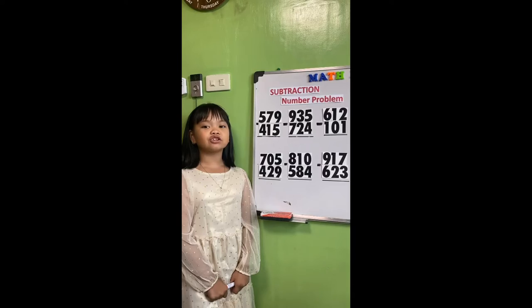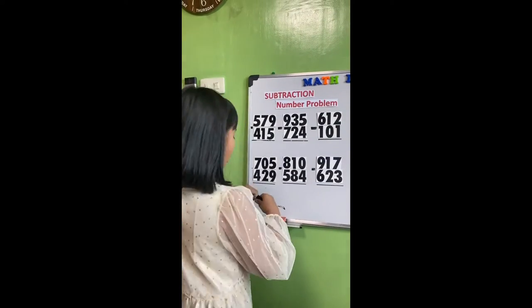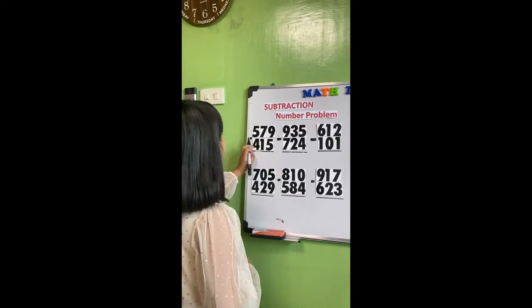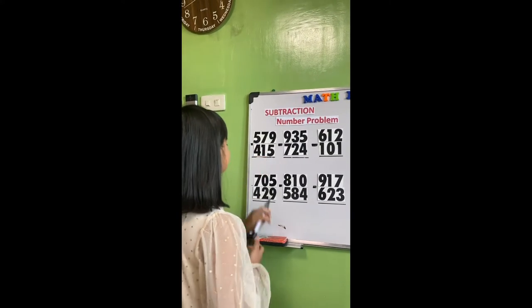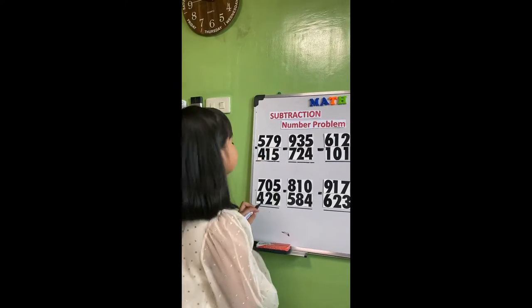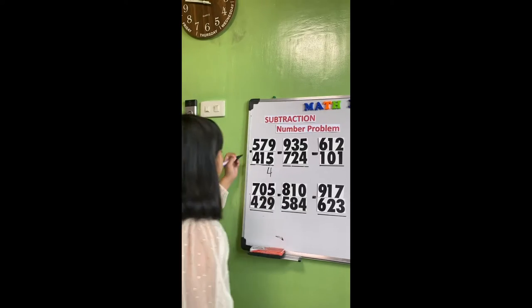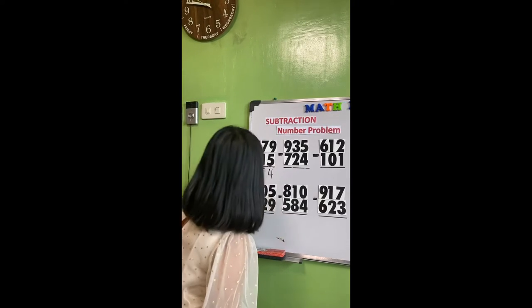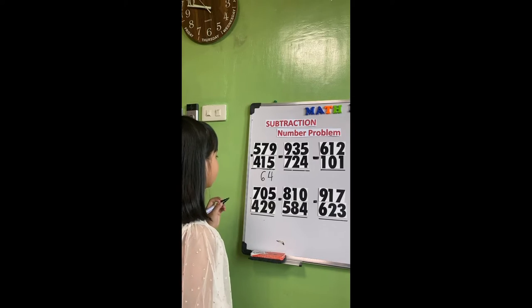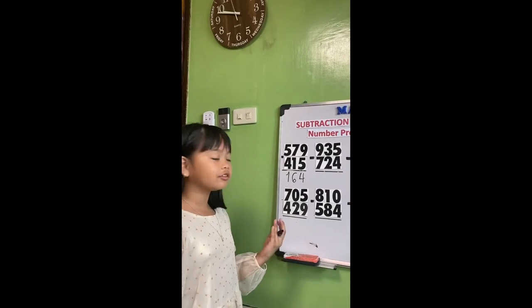Subtraction without regrouping. Number problem. Our first equation is 579 minus 415. 9 minus 5 equals 4. 7 minus 1 equals 6. 5 minus 4 equals 1. So our answer is 164.